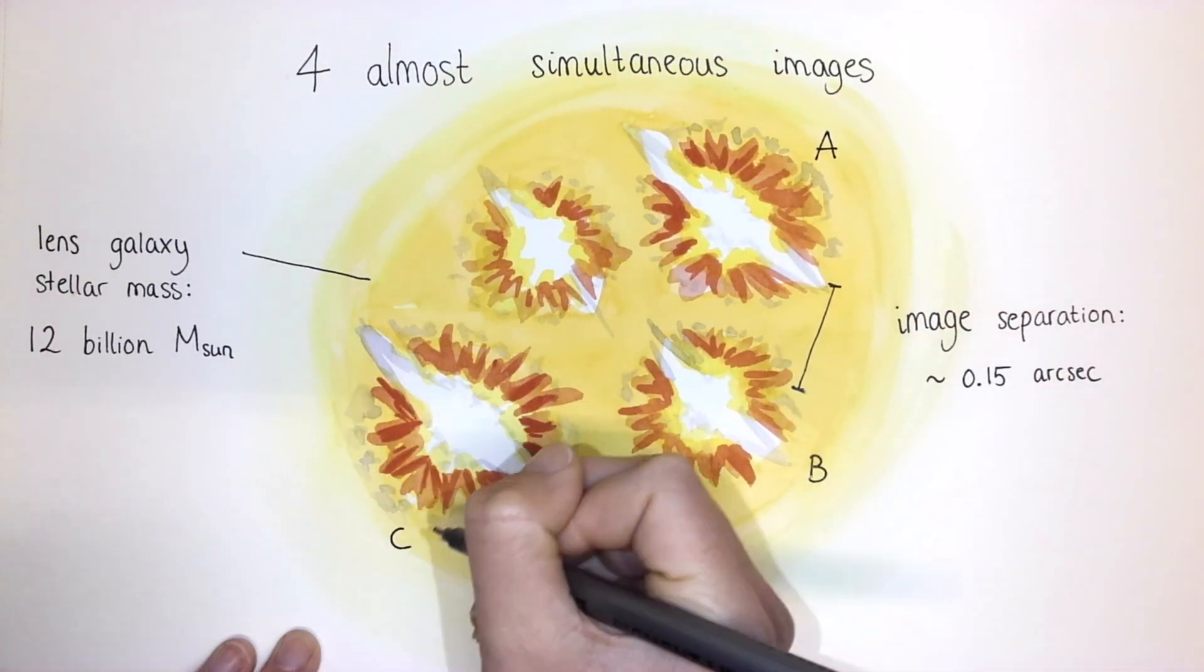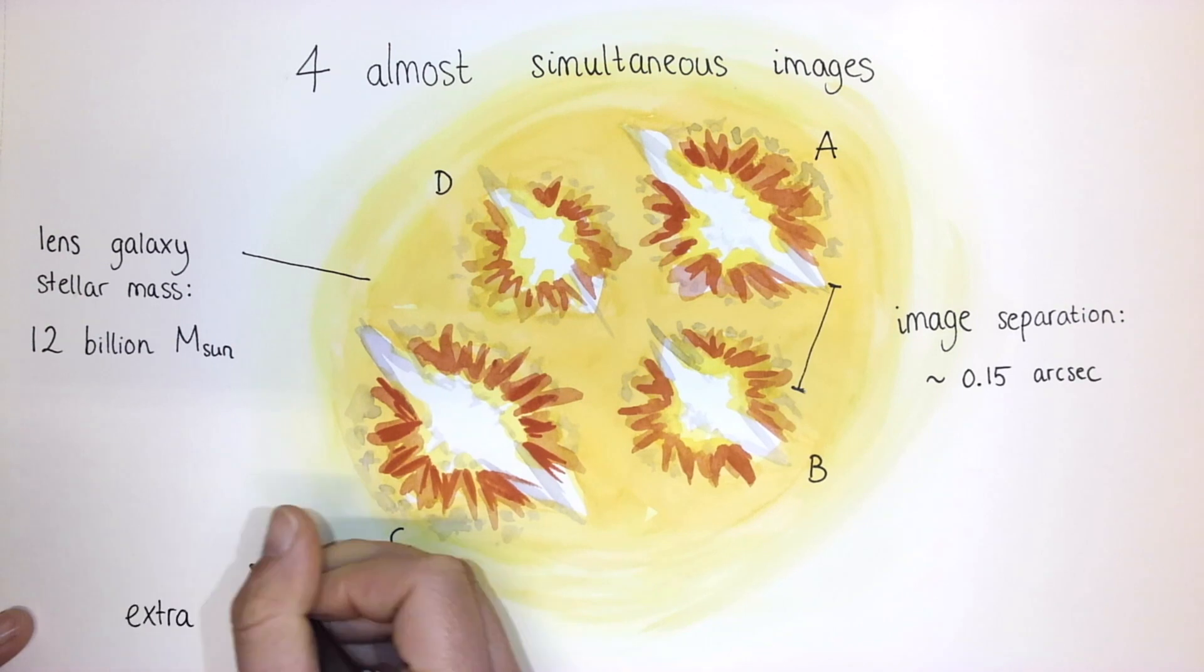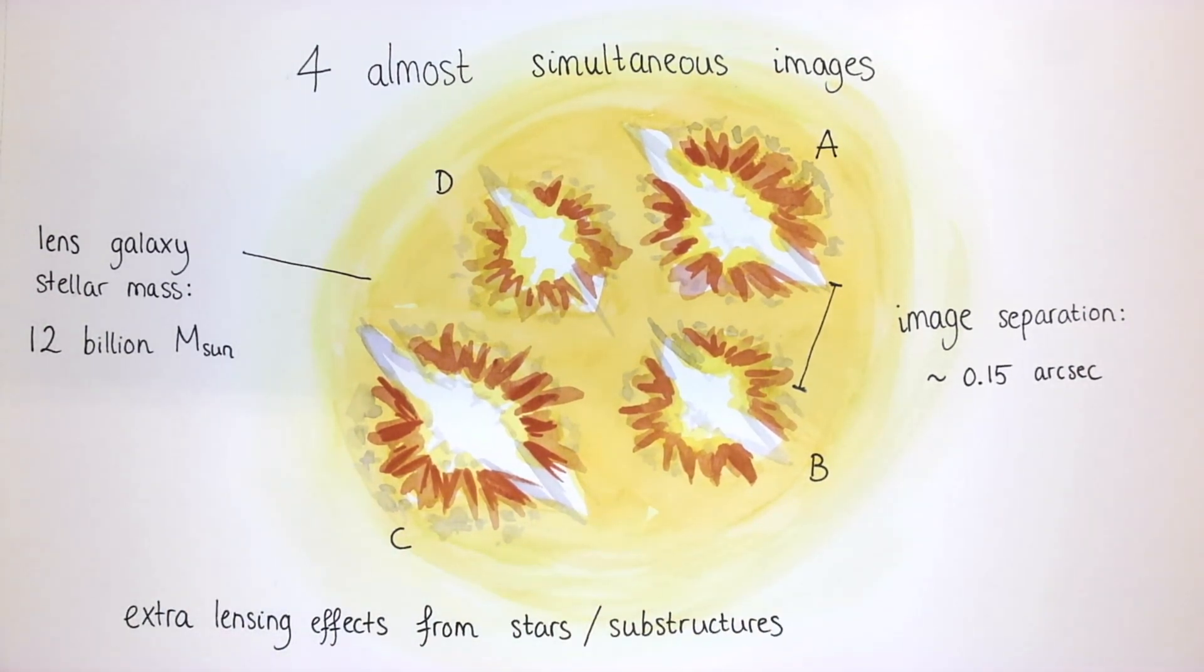Furthermore, our lens models indicate that the brightest images, A and C, should have actually been the faintest, suggesting the presence of additional lensing effects from stars, substructures, or dark matter in the lens galaxy.